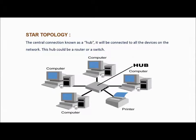The next one is star topology, in which all devices in the network are arranged like a star. Here, a hub is the device used to connect all the devices. The main disadvantage of this topology is if the hub goes down, the entire network will be down.